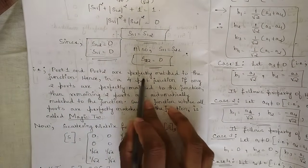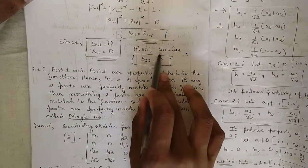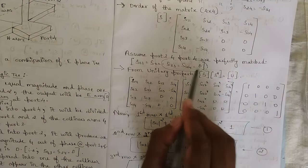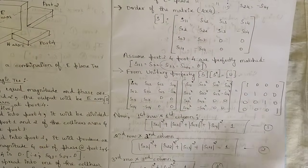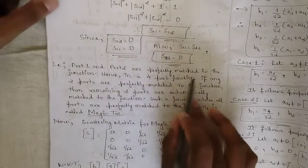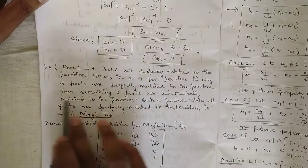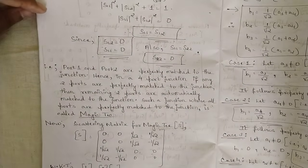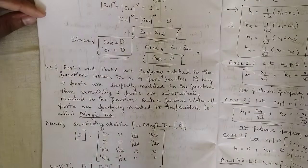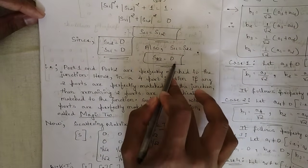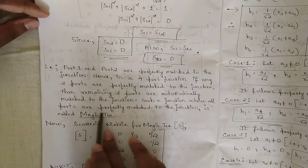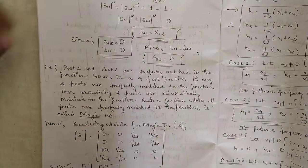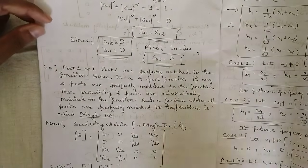Ports 1 and 2 are now perfectly matched since s11 and s22 are both zero. This proves the important result: in a four-port junction, if any two ports are perfectly matched to the junction, the remaining two ports are automatically matched as well. A junction where all four diagonal scattering elements are zero is called a Magic T.